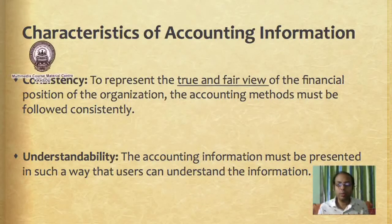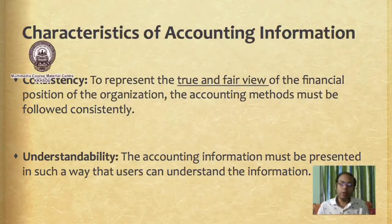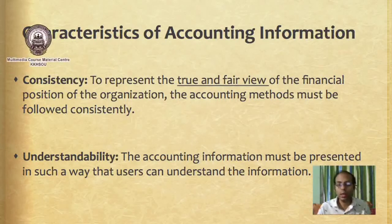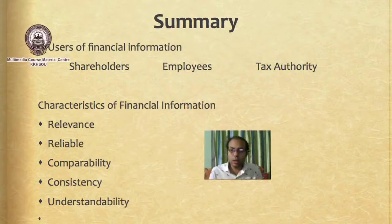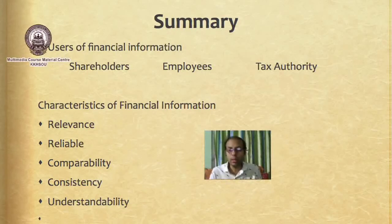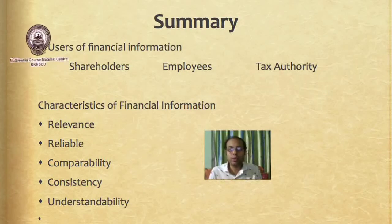Understandability: the accounting information must be presented in such a way that users can understand it. This understanding is important; however, users must also have some accounting knowledge so that they can interpret the results of the financial statements. In this session, we have discussed two main aspects: the users of financial information and their different purposes — shareholders for investment decisions, employees for job security and future prospects, and tax authority for tax purposes — and the characteristics accounting information must have: relevance, reliability, comparability, consistency, and understandability.